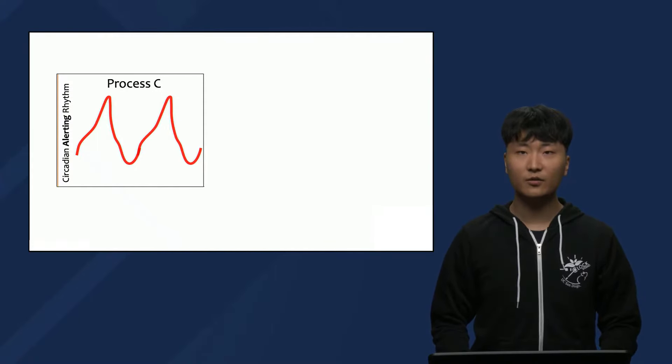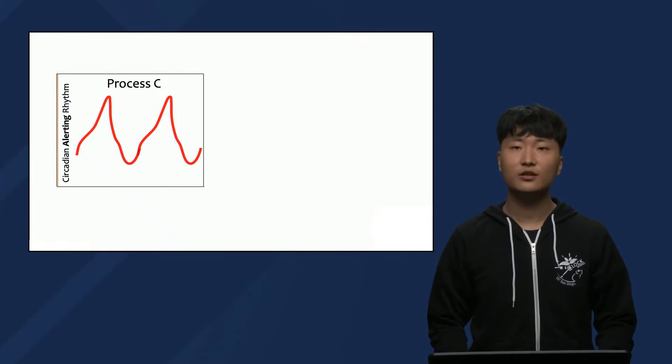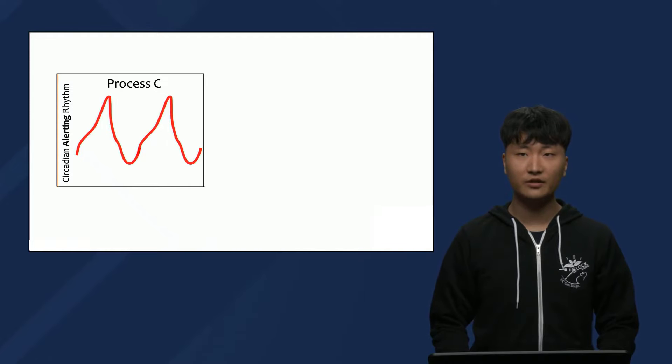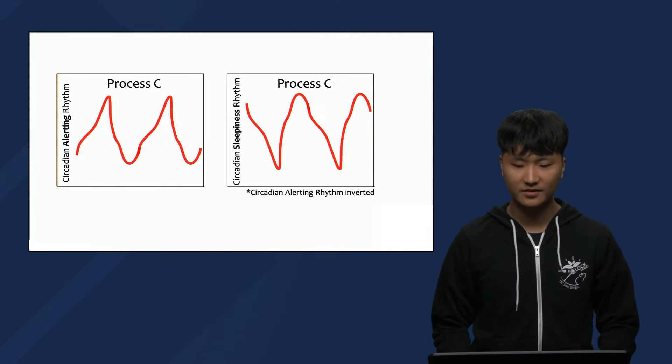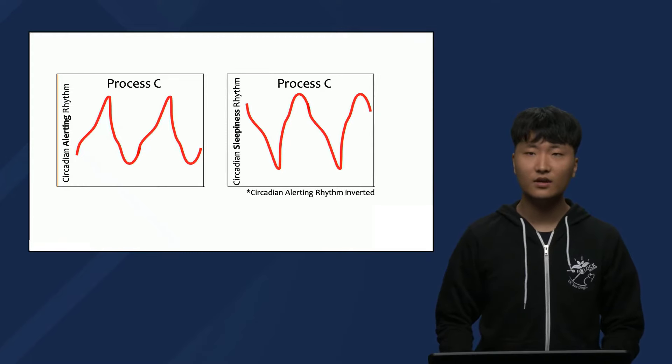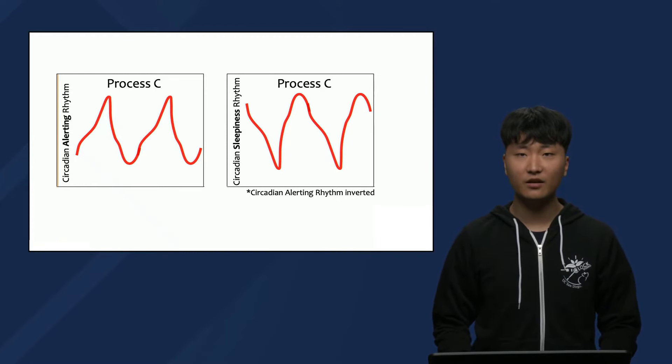Note, though, that the red graph represents alertness, while Lavi's figure is sleepiness. This becomes easier to see if we take the image of the process C alerting signal and flip it briefly, like this, and then put the participant data of the sleepiness rhythm behind it.